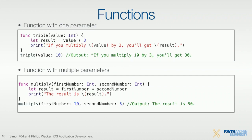If you have a function with one parameter, you put it into the brackets and define the name of the variable and the type — because Swift is type-safe. In this case we define a value and it's an integer, then you can call it by saying this is my function, this is the value parameter, and it should be 10.